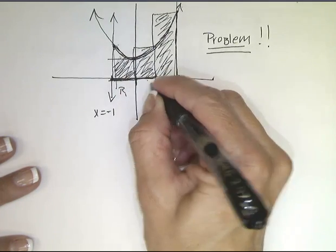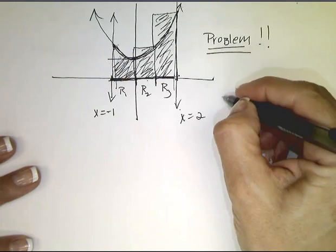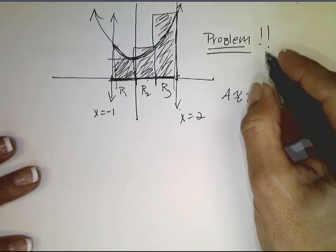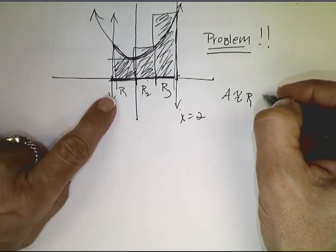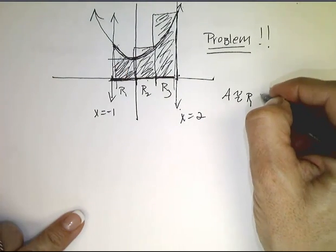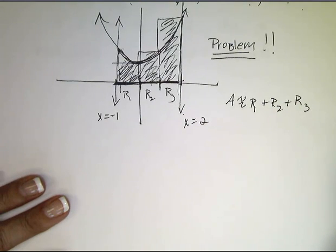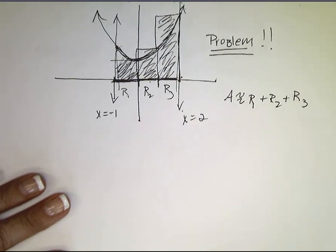And say that the area under this curve is approximately the area of the sum of these rectangles, right? So if that's R1, R2, and R3, then what I'm saying is that the area is about R1, the area of this region, plus R2, plus R3. And you would say, well, yeah, but it's not a very good approximation. And you would be right.